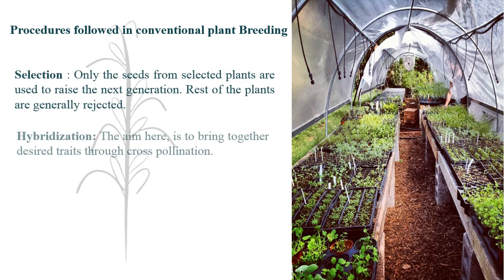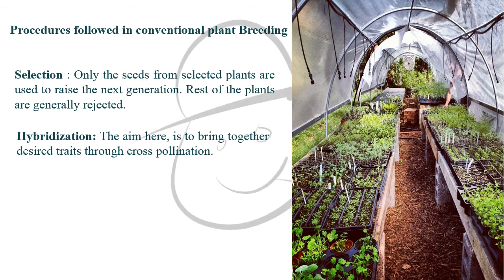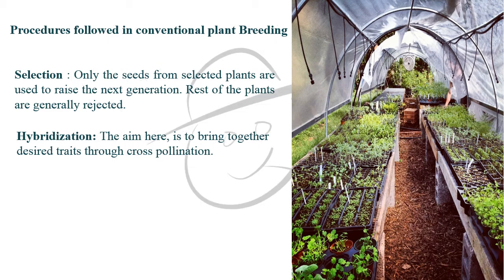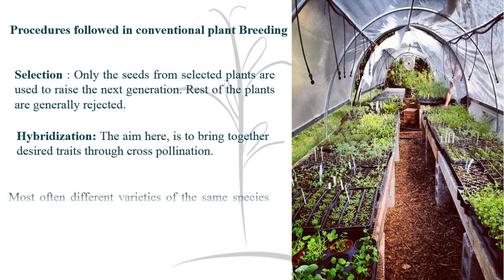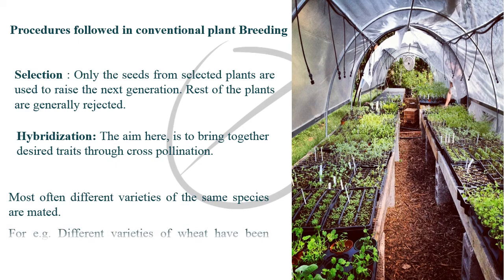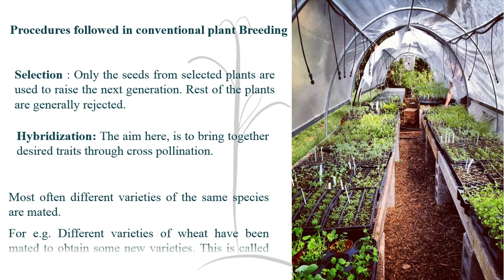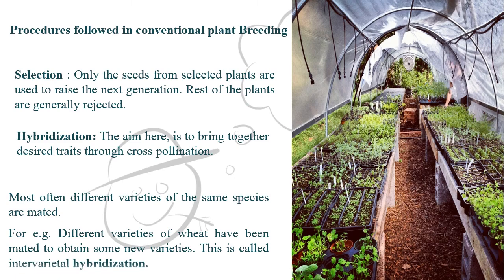The second one is Hybridization. The aim here is to bring together desired traits through cross-pollination. Most often, different varieties of the same species are mated. For example, different varieties of wheat have been mated to obtain some new varieties, and this is called Intervarietal Hybridization.